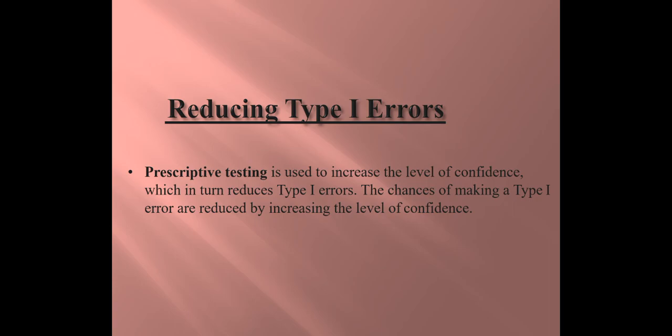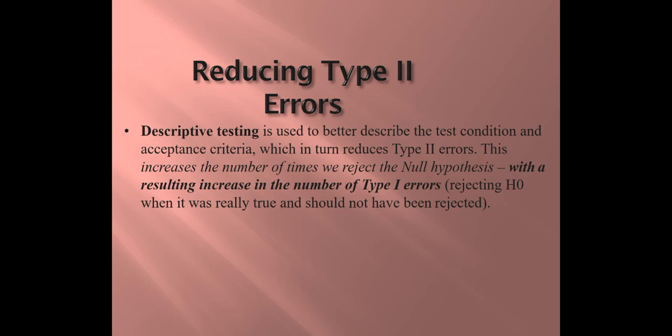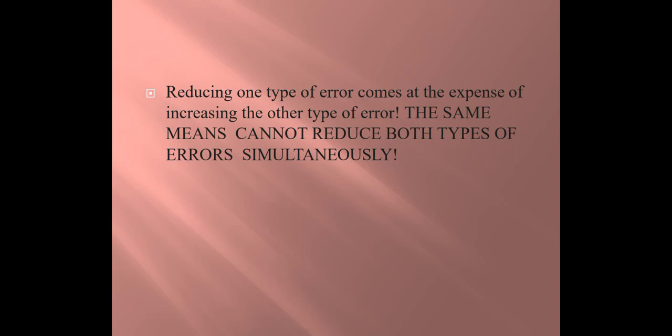How can we reduce Type 1 error? Prescriptive testing is used to increase the level of confidence, which in turn reduces the Type 1 error — the chances of making a Type 1 error are reduced by increasing the level of confidence. To reduce Type 2 error, descriptive testing is used to better describe the test condition and acceptance criteria, which reduces Type 2 errors. However, this increases the number of times we reject the null hypothesis, resulting in an increase in Type 1 errors. Reducing one type of error comes at the expense of increasing the other — we cannot reduce both types of errors simultaneously.